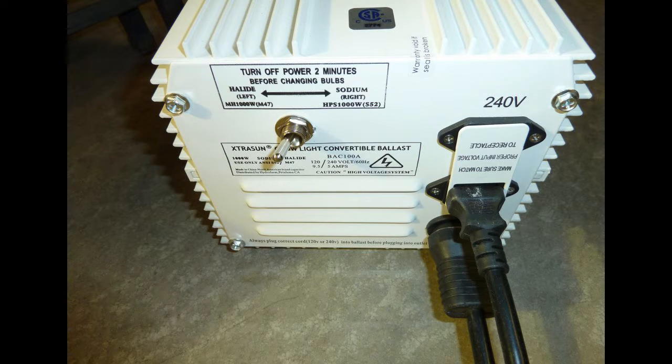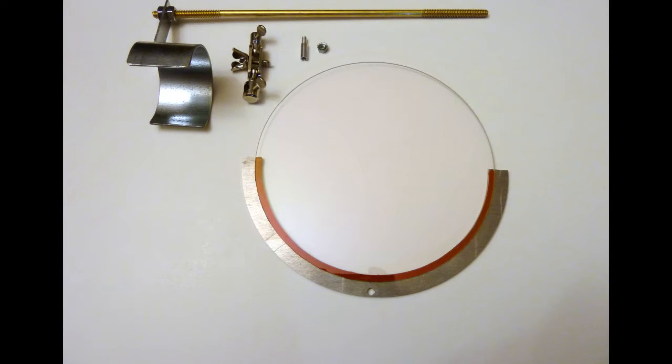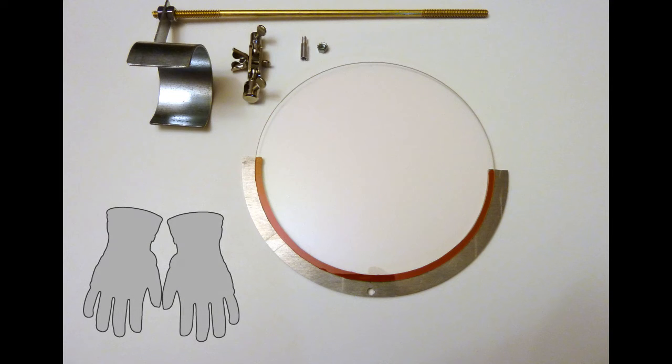The first step is to turn off your fixture and let it completely cool. Always unplug any fixture when working on it for safety purposes. Remove the Heat Stopper from the box and lay it out on the table as we have done here. Ensure that all the parts are present and accounted for. We recommend that you use a clean, soft pair of gloves to avoid getting oils on the lamp, and never put your hands directly on the Heat Stopper.